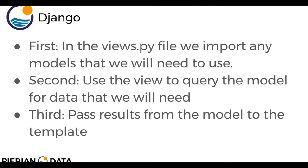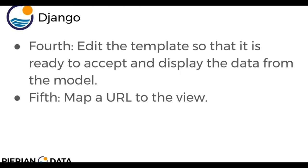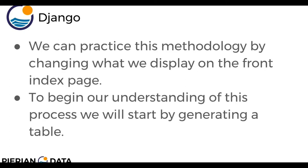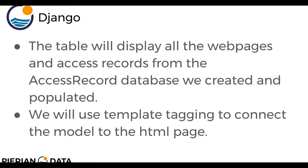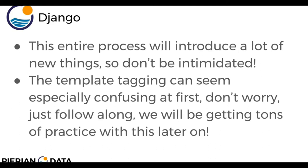The first step is that in that views.py file, we import any models that we will need to use. The second step is to use the view to query the model for data that we will need. The third step is to pass results from the model to the template. The fourth step is to edit the template so that it's ready to accept and display the data from the model. And then the fifth step is to map a URL to that actual view. We can practice this methodology by changing what we display on the front index page — we're going to start by actually generating a table on that index page.